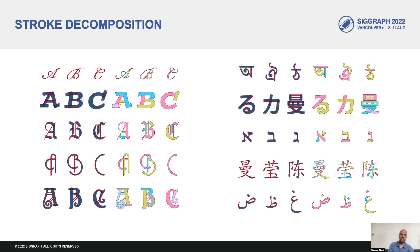Our method is based on perceptual principles and geometric procedures. It does not require training data, which is largely absent for the use case of western fonts, or templates that would break for the large variety of languages, styles and writing systems that are present in fonts.